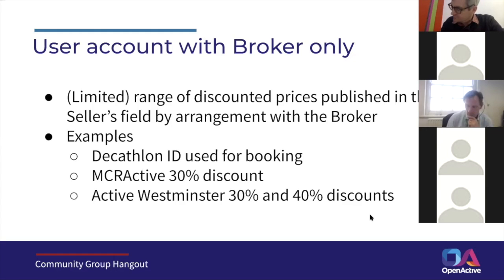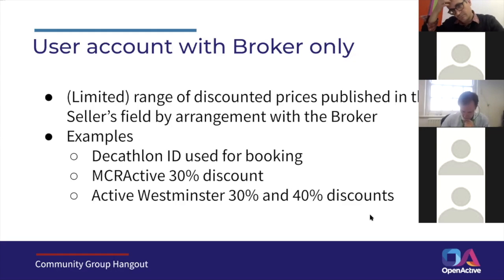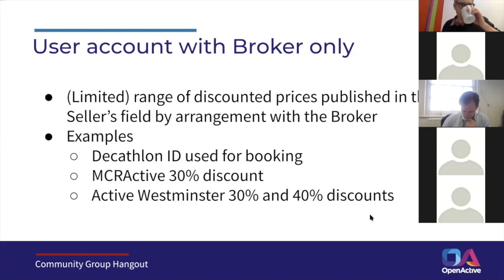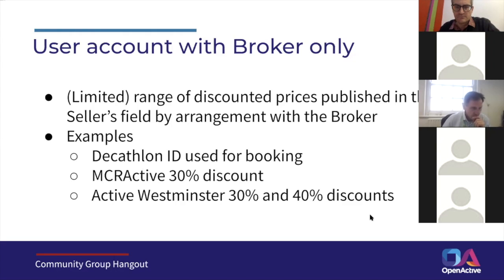With Gladstone, this would be implemented as new offers in the list — for example, discounted adult and discounted junior — so additional offers would be present in the open data and used to make the booking.